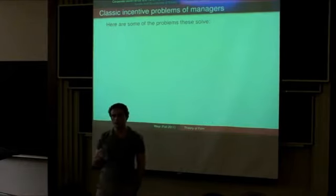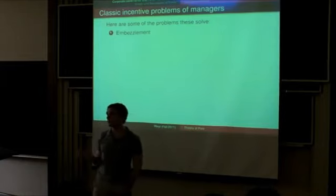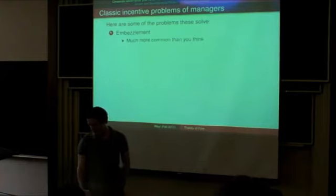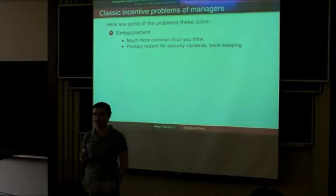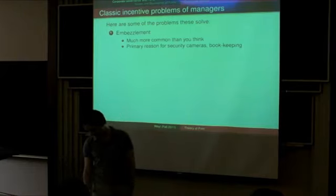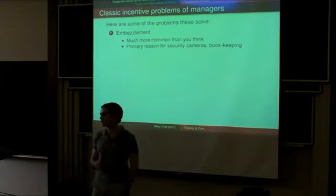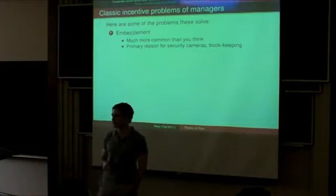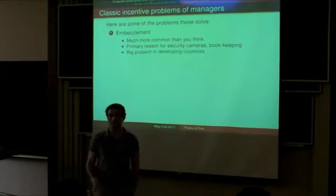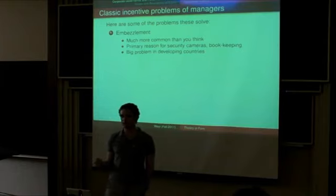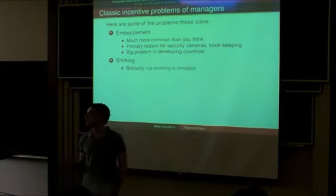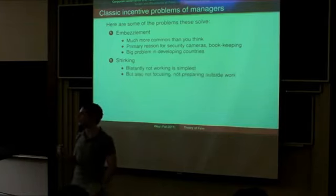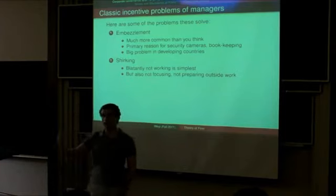What sorts of problems are these incentives used to solve? One major problem is embezzlement — just stealing from the company. This is actually a lot more common than you might think, and is the primary reason there are security cameras at most convenience stores — not because they're afraid of outside theft, but theft by their own workers. Apparently the main reason credit cards make sense is how much employees would steal from a cash register if cash were sitting there. In developing countries this is an even worse primary problem. Another problem is shirking — not working hard enough: blatantly not coming to work, not being focused, not being prepared.